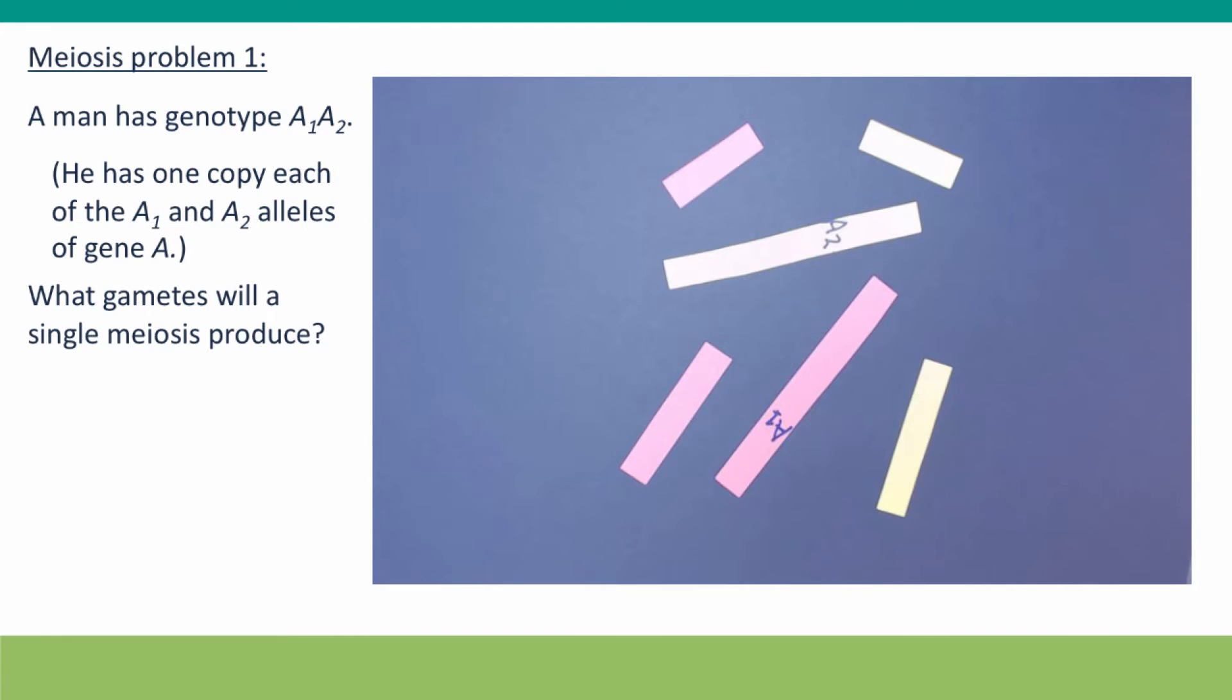By far the easiest way to solve problems like this is to simulate them with chromosomes made of paper strips, as we did in the first video of module 6 for mitosis. So let's do that now for meiosis.